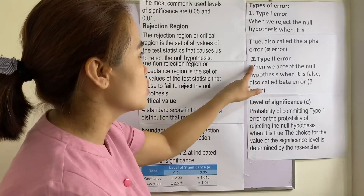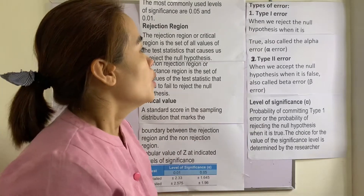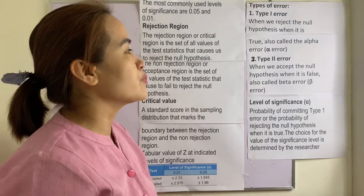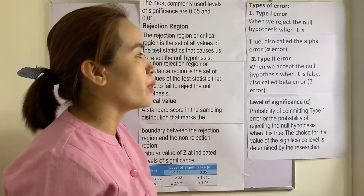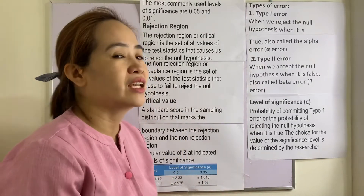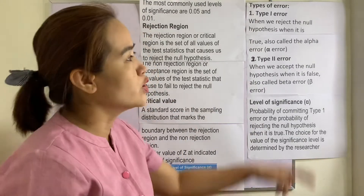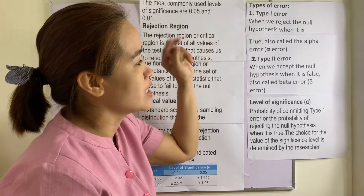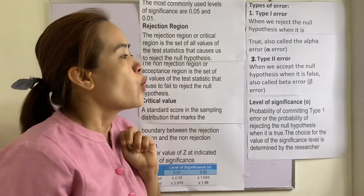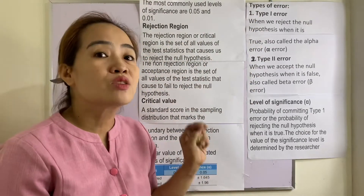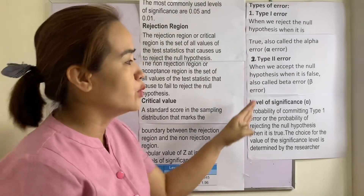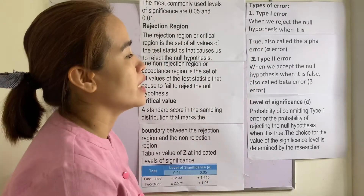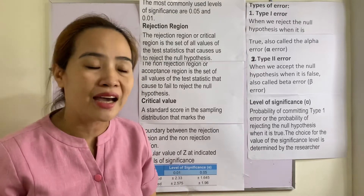Type 2 error is when we accept the null hypothesis when it is false. The first one occurs when the null hypothesis is true; the second one occurs when it is false. We call this one the beta error.